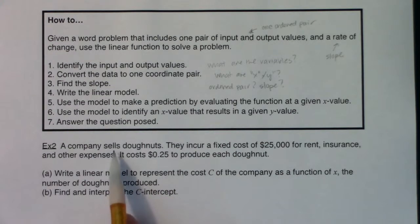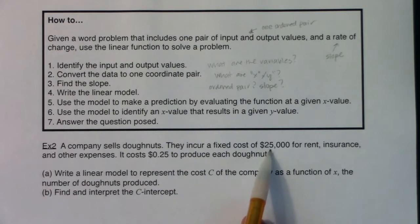So it says a company sells doughnuts. They incur a fixed cost of $25,000 for rent, insurance, and other expenses. It costs $0.25, which is 25 cents, to produce each doughnut. So I can hear a phrasing in here: it costs 25 cents per doughnut.